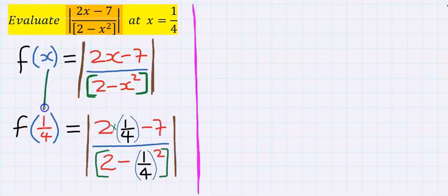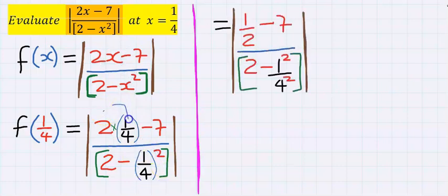Wherever I see x, it will be replaced with 1 over 4, as stated in the question. That is, instead of x, I'm going to have 1 over 4 in their positions.